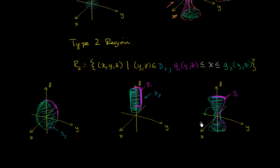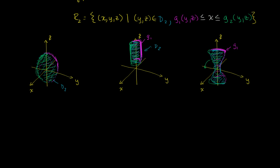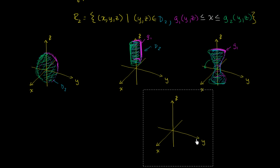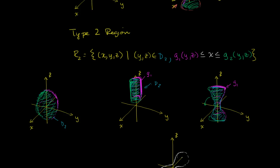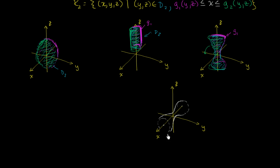Now, if we were to rotate it so that the top of the hourglass is facing us — it intersects the x-axis, bends in, and comes back out — then for the same reasons this was not a type 1 region, this orientation would not be a type 2 region. For any z,y pair, there could be multiple x points associated with the different parts of this hourglass — you can't just have a simple lower and upper bound. So this is not a type 2 region.